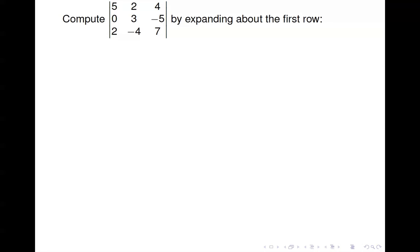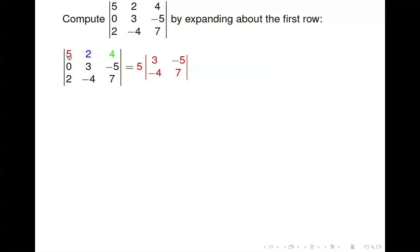For our first example, I'm expanding about the first row and I've color-coded it to make it easier to see where the terms come from. Starting with the first entry, the 5, we multiply 5 by the determinant of the matrix left after eliminating the first row and first column — that gives a 2x2 submatrix. Then we move to the 2, and multiply it by the determinant of the matrix after eliminating the first row and second column, leaving us with 0, 2, negative 5, 7.